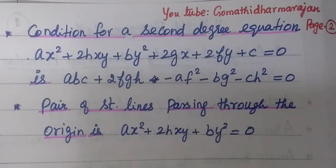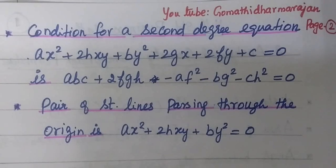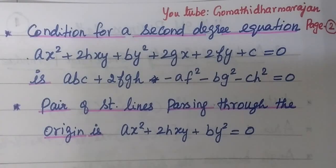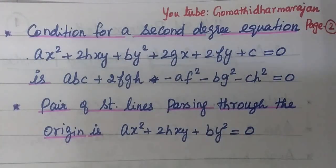One second degree equation can represent a pair of straight lines under this condition. If the condition is satisfied and the value substituted gives zero, then for the pair of straight lines passing through the origin, the g, f, and c terms vanish.